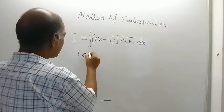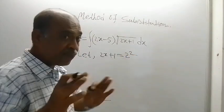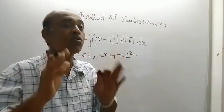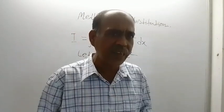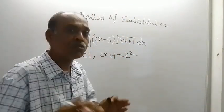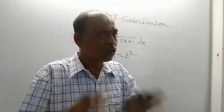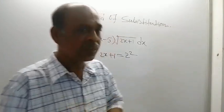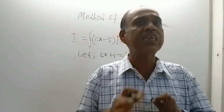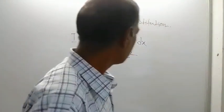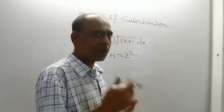Let 2x+1 equal z squared. If you take 2x+1 equal to only z, then also the problem can be solved with the same result. If you take 2x+1 equal to z cubed or z to the power 5 or z to the power n, the problem can still be solved. But if you take 2x+1 equal to z squared, the solution will be easiest with minimum algebraic calculation.